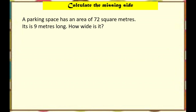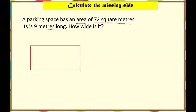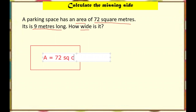How about if a side is missing? For example, let's read this problem: a parking space has an area of 72 square meters and it is 9 meters long. How wide is it? When solving a problem like this, I advise you to draw a diagram. The area is given as A = 72 m², and the length is 9 meters. The width is unknown.